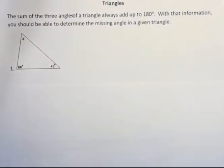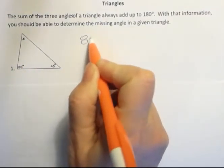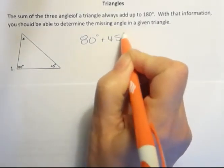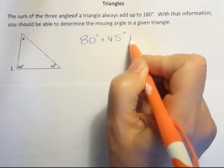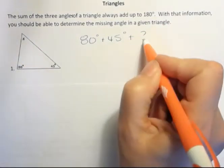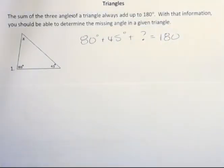So in this particular triangle they show us that we have one angle that measures 80 degrees and another that measures 45 degrees and we have a third. We don't know what it is. They're calling it X. I'm just putting a question mark here, but what I know is those three things have to add up to 180.